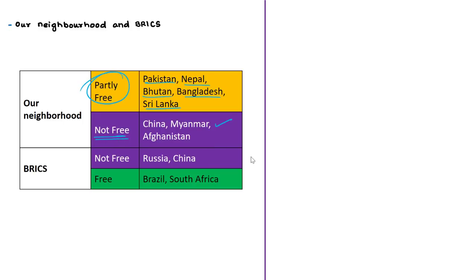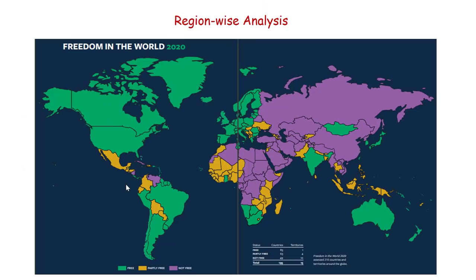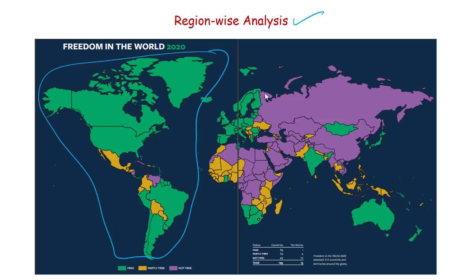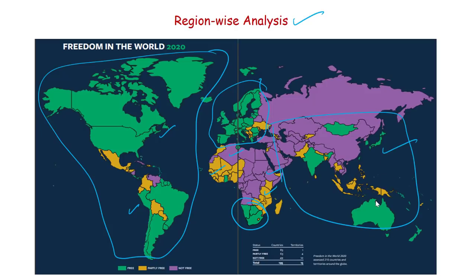Among BRICS nations, China and Russia are under not free, while Brazil, South Africa, and India are under the free category. Region-wise, all countries in the Americas and most in Europe are free. In Africa, except for Tunisia, Botswana, Ghana, and South Africa, the majority are not free or partly free. A vast majority of Asian countries are under the not free category, depicted in purple on the map.